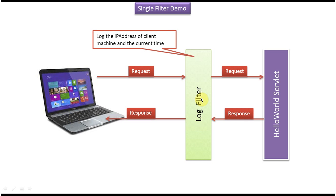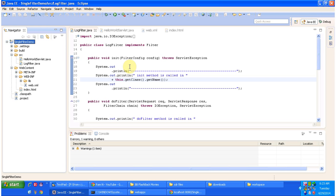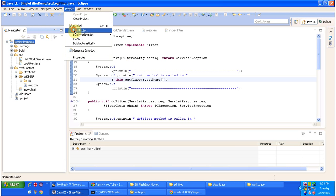This configuration we can do in the web.xml. Before hitting the HelloWorld servlet, the request should go to the log filter — that kind of configuration we can do in the web.xml. I will show you the code and explain it clearly so that you will understand. To explain how to configure a single filter, I have created a web application called single filter demo. First I will deploy this web application, so before that I will build this project.